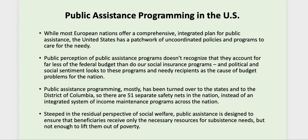Richard Nixon, in 1972, suggested a guaranteed national income that would be a bottom floor to ensure all Americans had at least a minimum amount of money to get by on, but Congress did not approve it. The public perception is that public assistance programs are really draining our economy, and that needy people are the reasons for our nation's budgetary problems, whereas in fact the amount of money taken from the federal budget compared to social insurance programs is really very minimal.